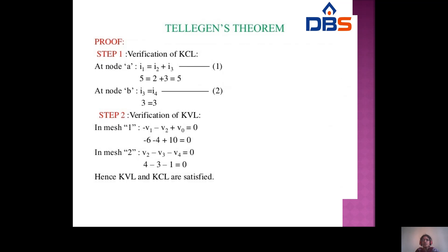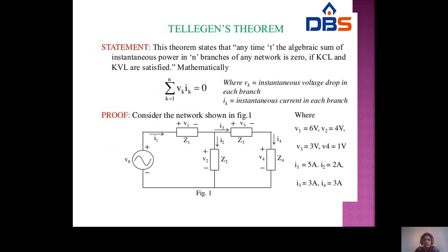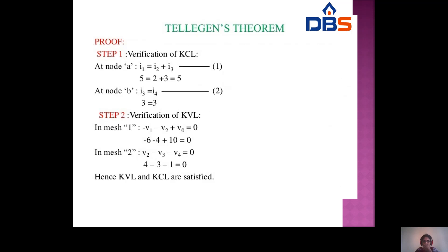Verifying KVL: for loop 1, −V1 − V2 + V0 = 0 gives −6 − 4 + 10 = 0 ✓. For loop 2, V2 − V3 − V4 = 4 − 3 − 1 = 0 ✓. Both KCL and KVL are satisfied.